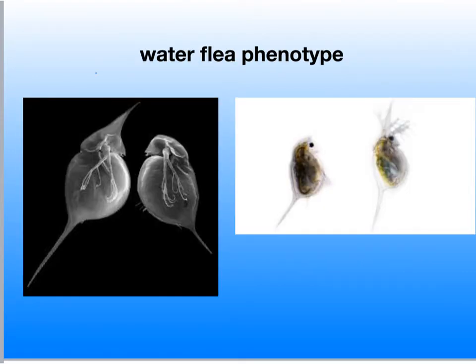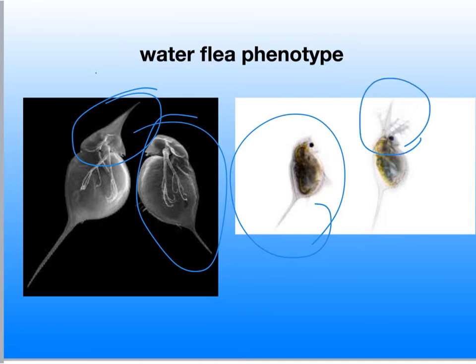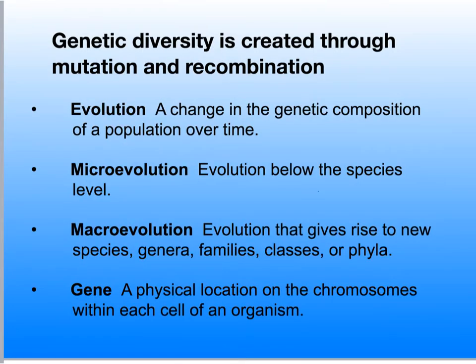Let's take Daphnia, for example. This is an environmental effect on a phenotype. Water fleas raised in the absence of any predators produce relatively small heads and short spines — like this guy and that guy. In contrast, individuals raised in the presence of a lot of predators produce really large heads, long spiny tails, and multiple spine features on top of their heads.